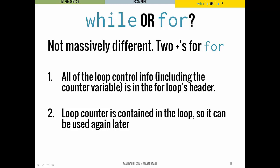There are two advantages to for loops, particularly if you're using count controlled loops. The first is all of the loop control info, including the counter variable that you declare, is in the for loop's header. It's all there in one place, which is kind of nice to have it all wrapped up in one little package. The second thing is that because the loop counter is contained in that loop and disappears afterward after the loop is done running, you can use that same counter again later with no problems, no complications. So not having to worry about accidentally reusing a counter or resetting your counter - it's nice to have that not be on our mind.